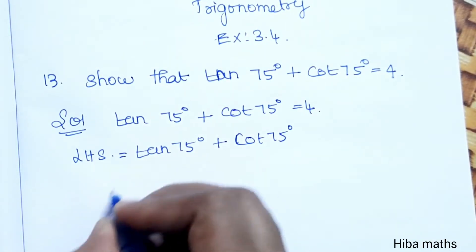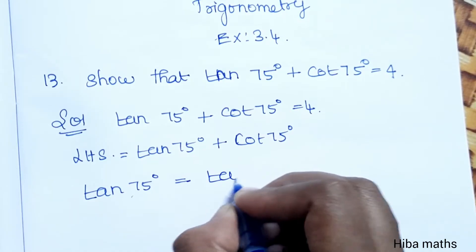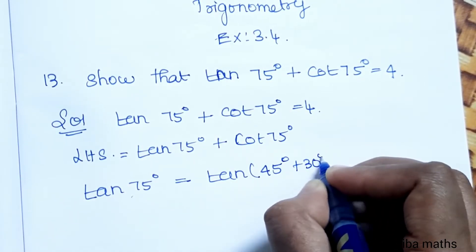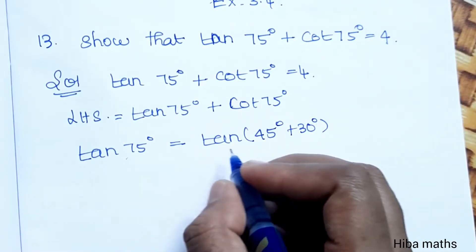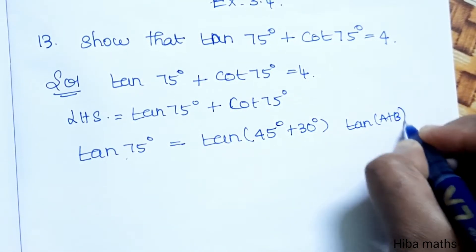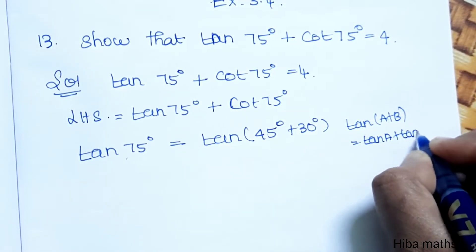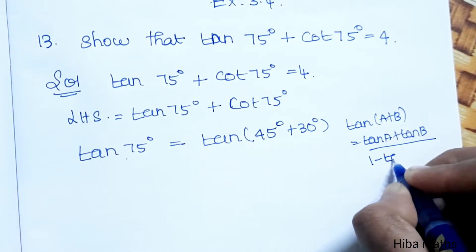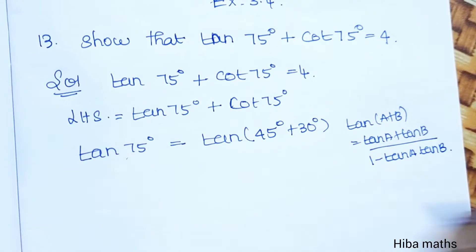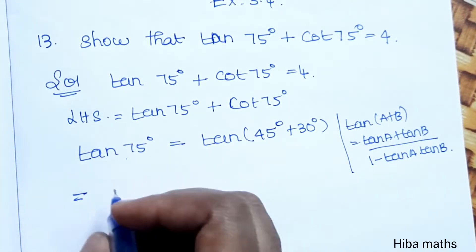For the LHS, first we take tan 75°. We split 75° as 45° + 30°. We use the formula tan(A + B) = (tan A + tan B) divided by (1 − tan A · tan B). The formula is written, now we substitute.